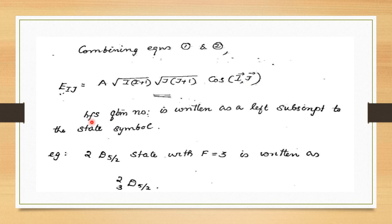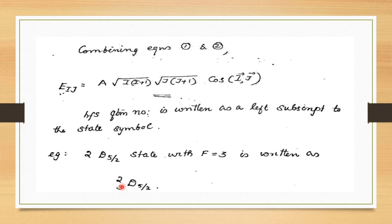The HFS quantum number f is written as a left subscript to the state symbol. For example, if 2D_{5/2} is a state with f = 3, it is written as ³(2D_{5/2}), where 3 on the left subscript is the hyperfine structure quantum number.